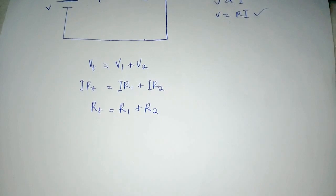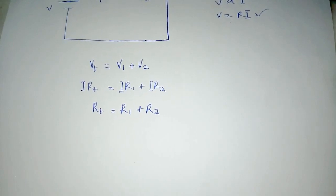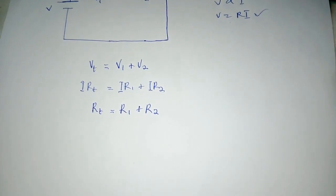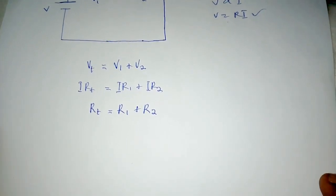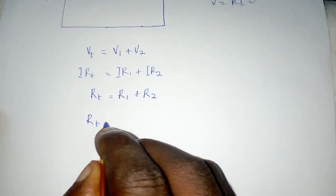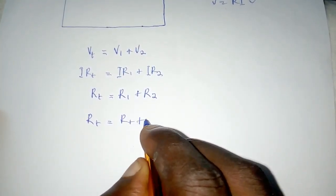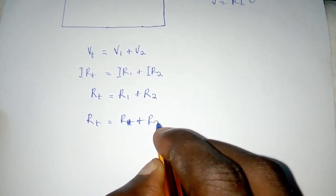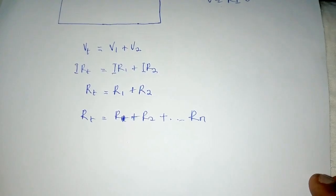So generally we find the total resistance of a number of resistors in series by merely adding the resistors together, the individual resistors together. We can have Rt, the total resistance, equal to R1 plus R2 plus Rn.